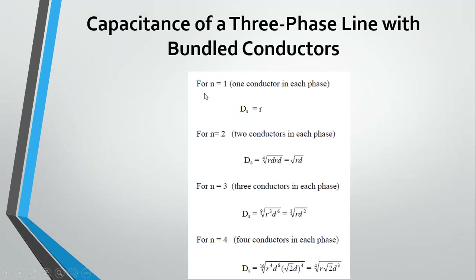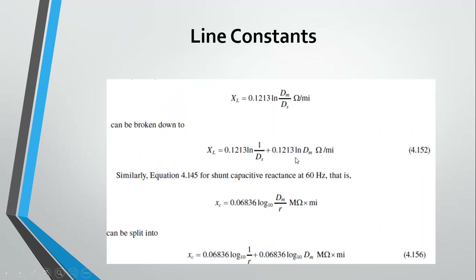For a bundle of conductors, the capacitance formula uses a modified D_S: if there is 1 conductor, D_S = R; if 2 conductors, D_S = √(R·d); if 3 conductors, D_S = ∛(R·d²); and if 4 conductors, D_S = ⁴√(1.414·R·d³).